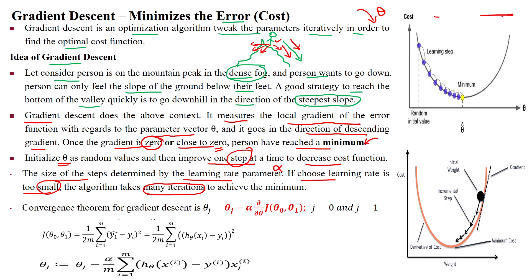When you take the biggest step distance, the person can go fast. But there is again the problem of different zigzag positions. Gradient descent can be achieved by using the convergence theorem. The formula is: theta j equals theta j minus the learning rate alpha, then partial differentiation of the total error with respect to the parameters.